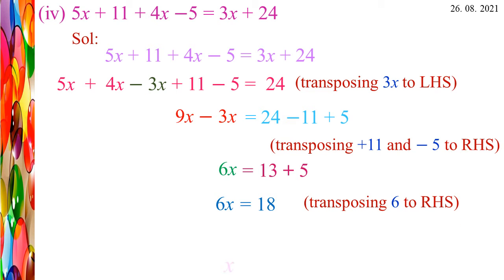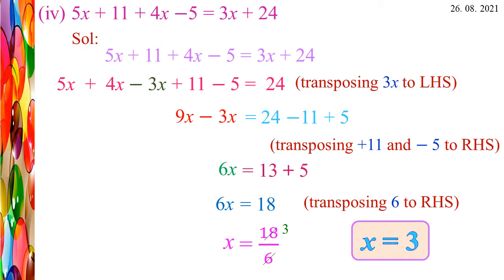Transposing 6 to the RHS: X = 18/6. Cancel the common factor: 3 sixes are 18. So X = 3. The X value is 3.